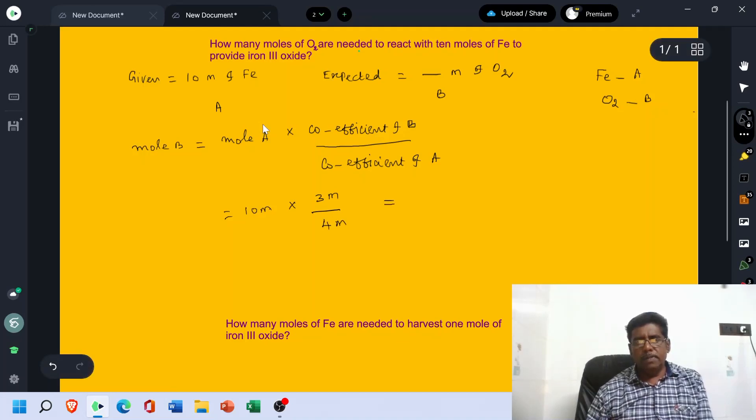Which is equal to, mol get cancelled, 10 mol times 3, 30 mol divided by 4, which is equal to 7.5 mol. So the answer is we need 7.5 mols of O2.